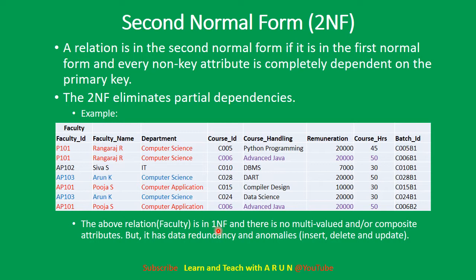There are no multiple values and no composite attributes — all values are atomic. This satisfies the First Normal Form.